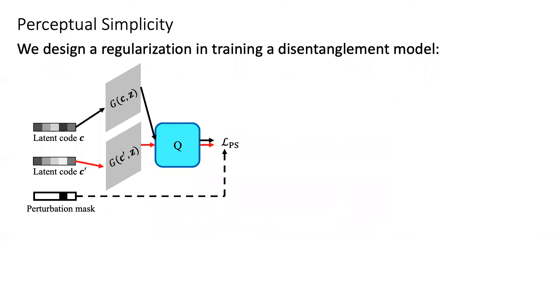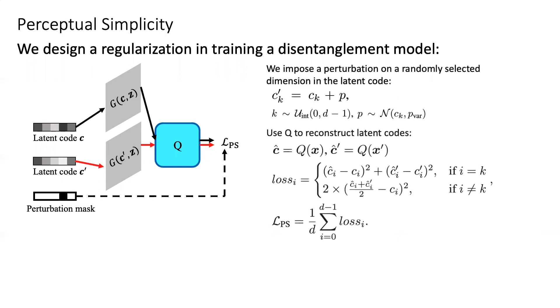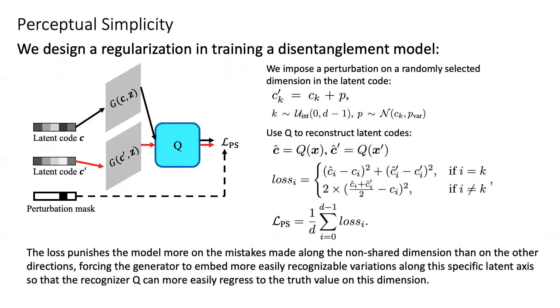This PS loss is computed by first randomly choosing a latent code to perturb. Then we use a Q network to reconstruct both the latent codes. However, instead of doing the direct reconstruction, we use the average value as output on the shared dimensions.